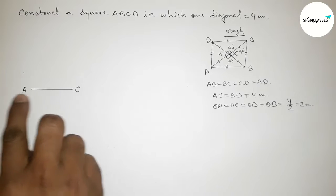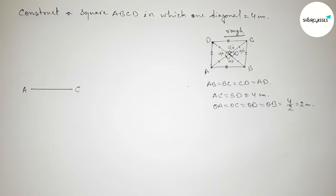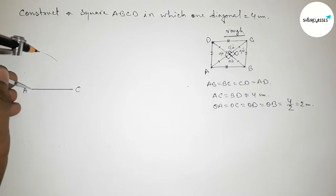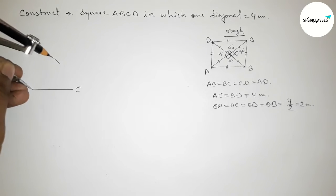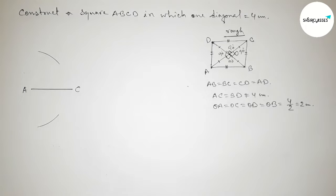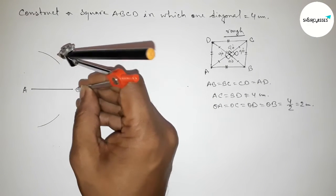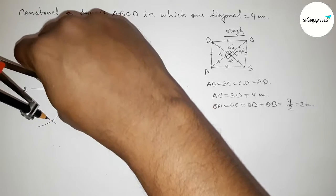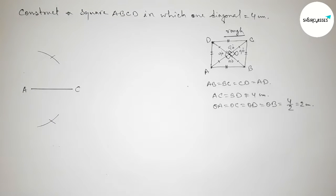First we have to bisect the line AC perpendicularly. So putting the compass here and taking greater than half of AC and drawing an arc here and drawing an arc here. Again with the same length, putting the compass here and cut here and cut here.